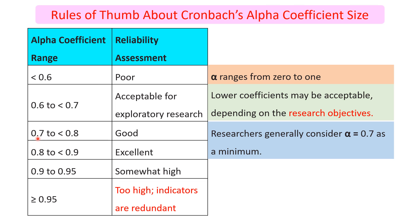If the coefficient alpha is between 0.7 and 0.8, it is good. In social science research, researchers generally consider 0.7 as the minimum threshold.